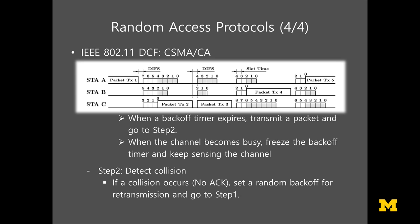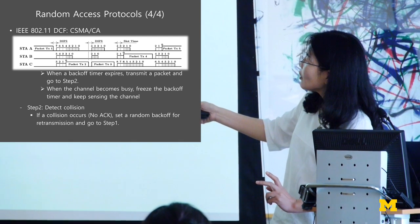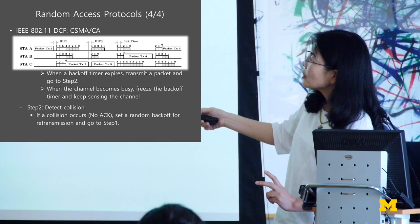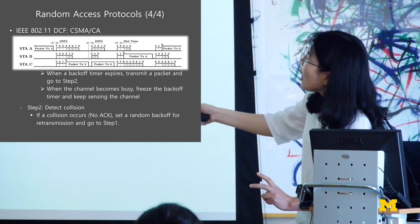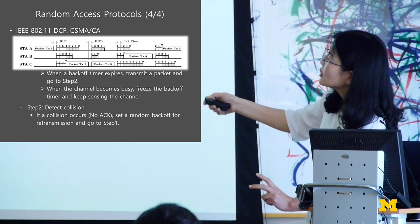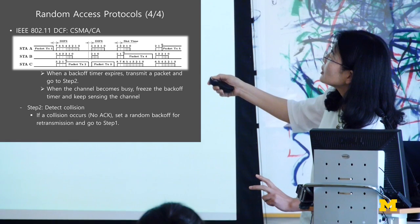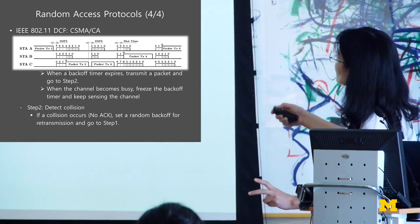Here is an example: station A sends a packet. We all listen for DIFS time, and if the channel remains idle, station A picks a random backoff timer of 7. Stations B and C start with 5 and 3 respectively. After 3 slots, station C's backoff timer expires and it transmits. During this transmission, the other nodes' backoff timers freeze — not decreasing. Once the transmission completes, after another DIFS time, they get a chance to resume decreasing their backoff timers.